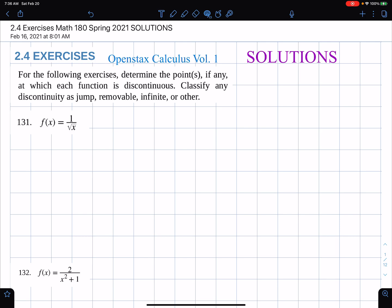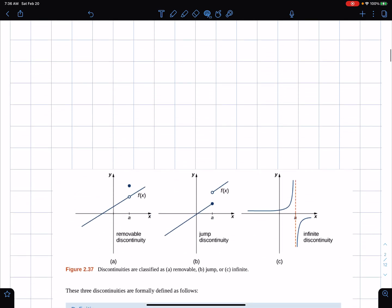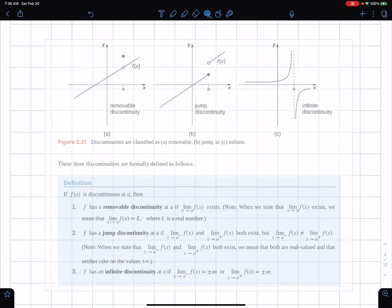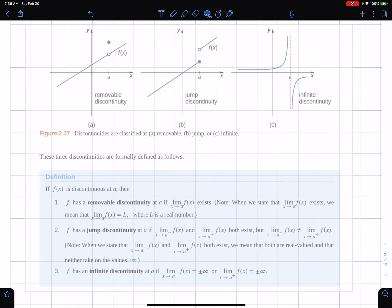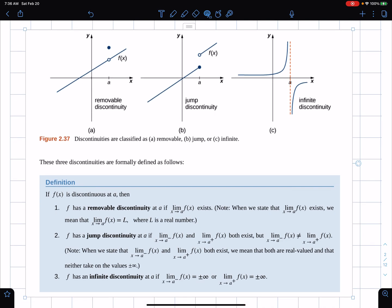I want to remind us what these are, these jump discontinuities and so forth, removable discontinuities, and here this is directly copied and pasted from OpenStax. Removable discontinuity is a situation where the limit exists, but the limit doesn't equal the value of the function.